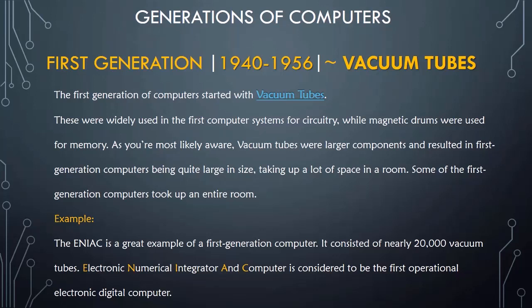First generation computers took up a lot of space — some took up an entire room. ENIAC is a great example of a first generation computer. It consisted of nearly 20,000 vacuum tubes.